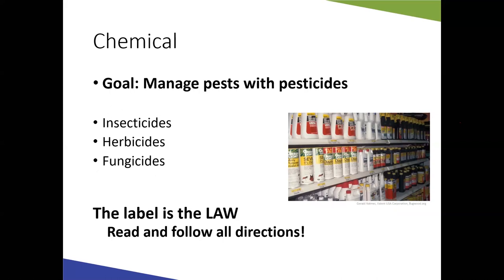Chemical management involves using pesticides — insecticides, herbicides, fungicides — to manage pests. As always in extension, the label is the law. Read and follow all label directions. Make sure the chemical can legally be applied to tomatoes — if tomatoes or vegetable crops aren't listed on the label, you cannot apply that chemical to your plants.